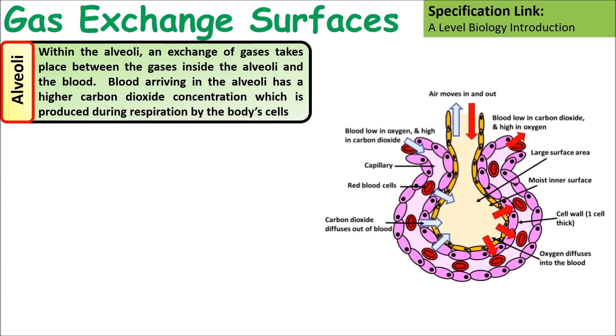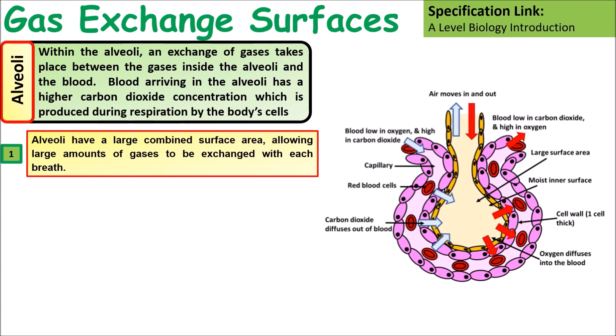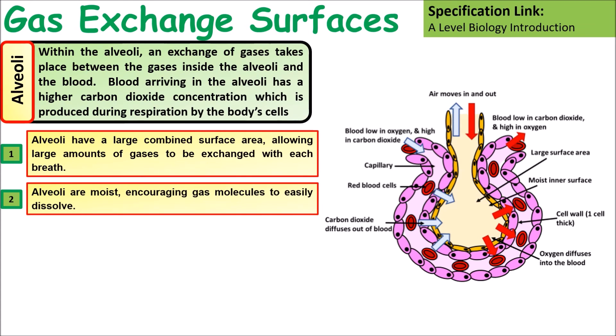Within alveoli, an exchange of gases takes place. Oxygen is taken into the blood, and carbon dioxide is allowed to diffuse back out into the air. Alveoli have a large combined surface area because there are many millions of them. Alveoli are moist because a moist surface enables oxygen to diffuse into that moisture, which increases its rate of diffusion through the cells into the blood.